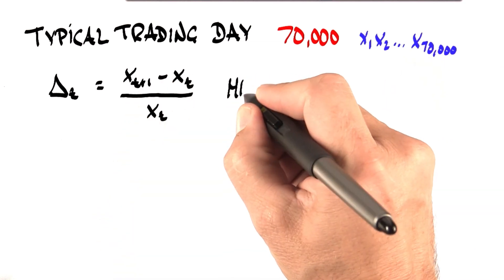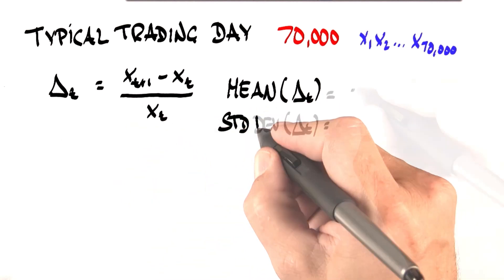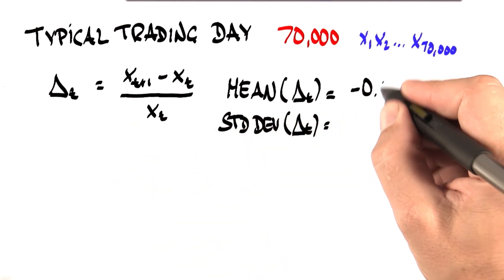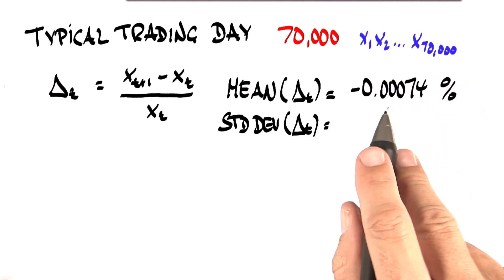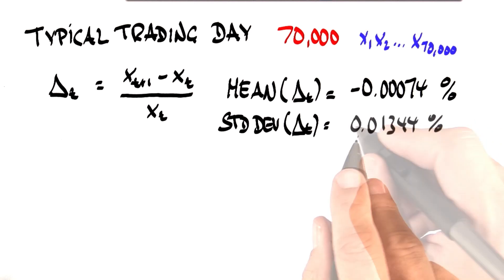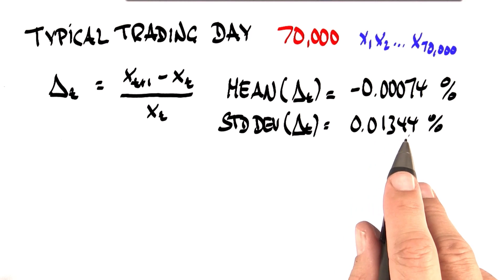And we know for the day in question what the mean and the standard deviation is for this percentage change. The mean is as small as negative 0.00074% in percent. So we leave off the percentage even 100 times smaller. And this is the value for the standard deviation, 0.01344%.